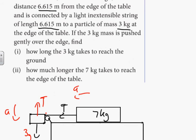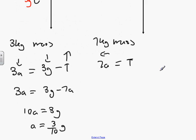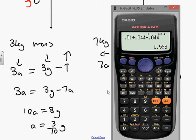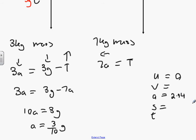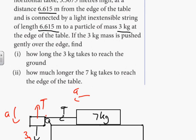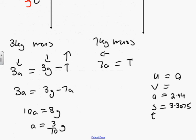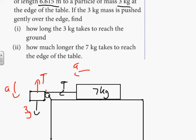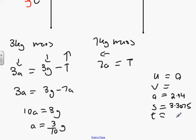How long does it take the 3kg mass to reach the ground? UVAST: u starts at zero, it has an acceleration of 3 over 10g. We'll turn that into decimals - 3 over 10 multiplied by 9.8. That's 2.94. S, the distance is 3.3075. We're looking to find how long it took to reach the ground, looking for t. Any ideas what to do here?